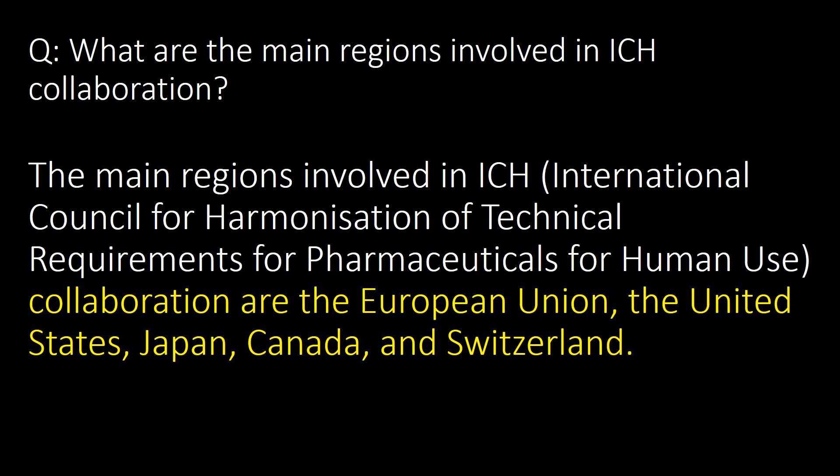What are the main regions involved in the ICH collaboration? The main regions involved in the ICH collaboration are the European Union, the United States, Japan, Canada, and Switzerland.